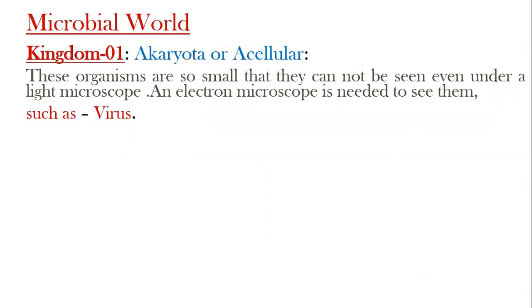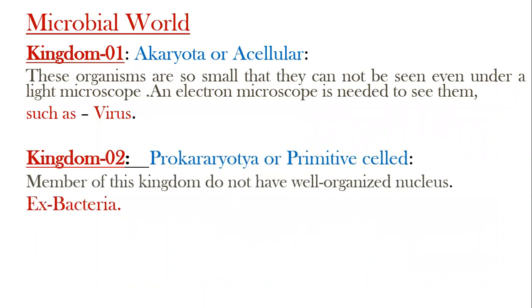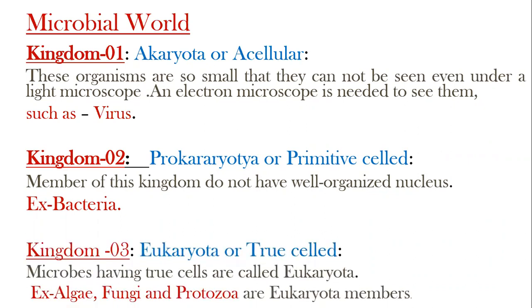Kingdom number one: Acaryota, or acellular. These organisms are so small that they cannot be seen even under a light microscope — an electron microscope is needed to see them. Example: virus. The second kingdom: Prokaryota, or primitive cell. Members of this kingdom don't have a well-organized nucleus. Example: bacteria. Kingdom number three: Eukaryota, or true cells. Microorganisms having true cells are called Eukaryota. Examples: algae, fungi and protozoa.